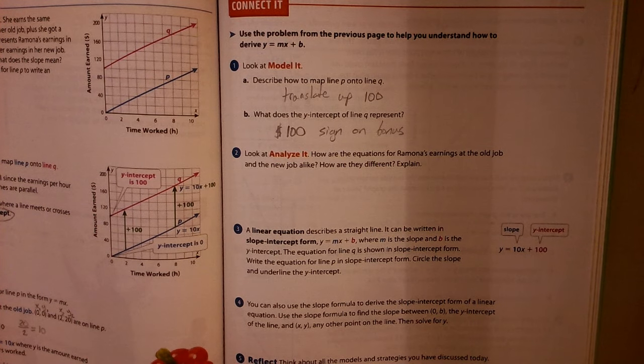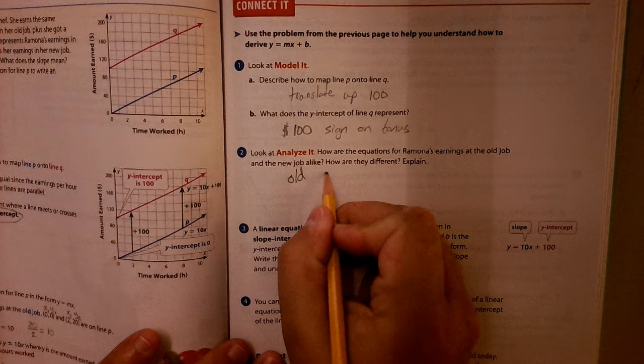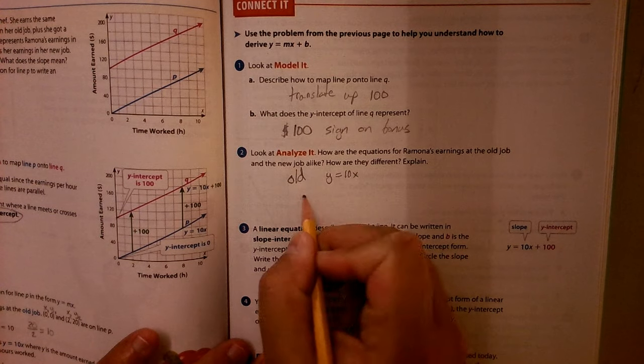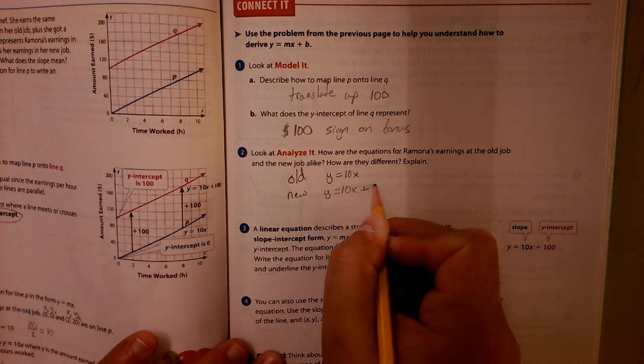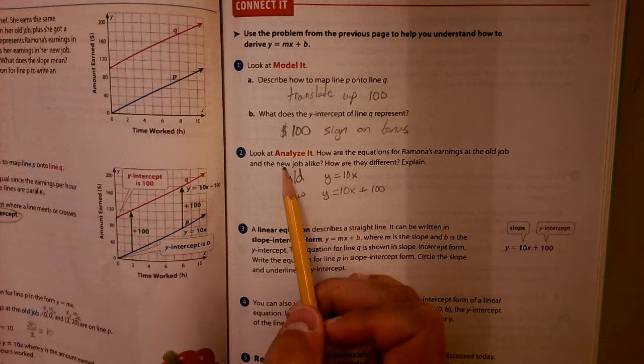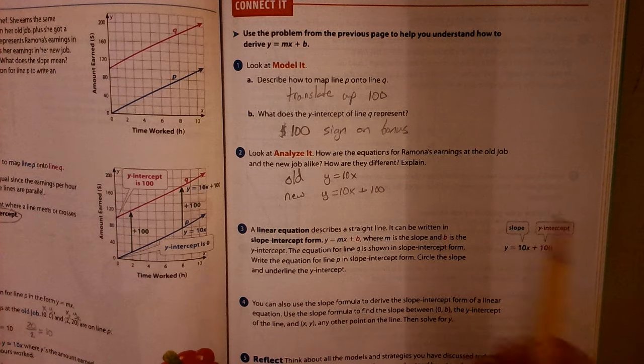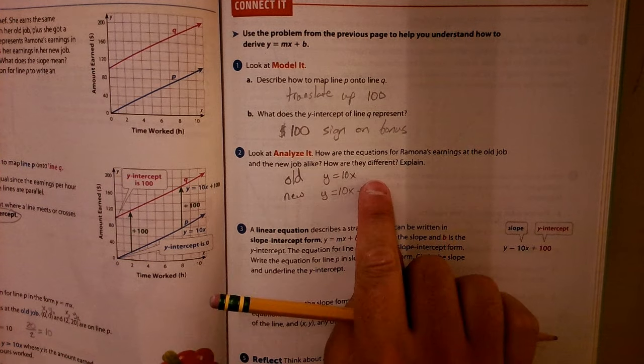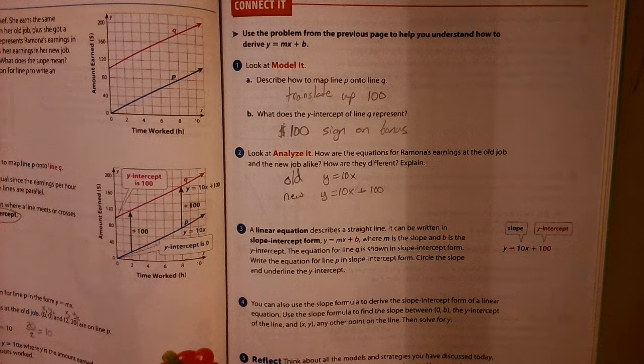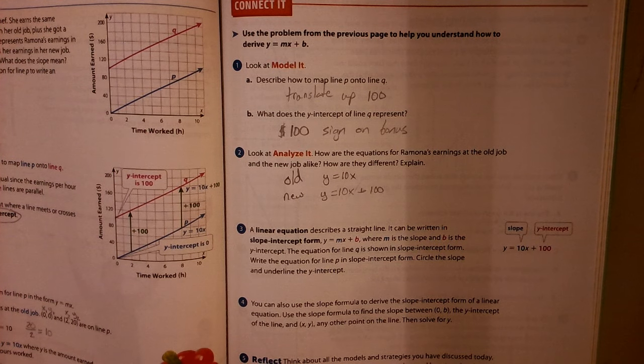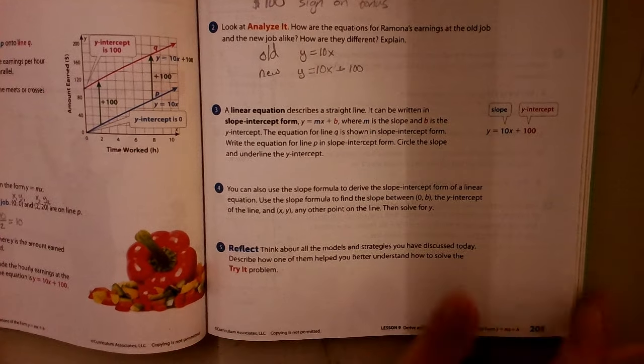Next we've got, how are the equations for Ramona's earnings at the old job and the new job alike? So old job looked like this: Y equals 10X. And then the new job was Y equals 10X plus 100. So we can see, how are they alike? Well, they're making $10 per hour in both of them. They're exactly the same up to this point. But then once we add in that plus 100, that plus 100 is what makes them different. Her sign-on bonus for her new job is what makes it different.